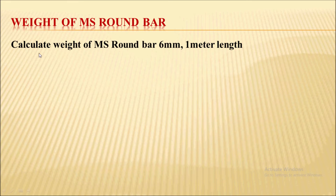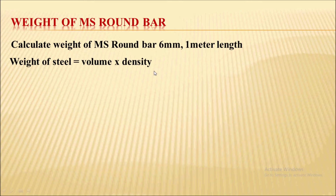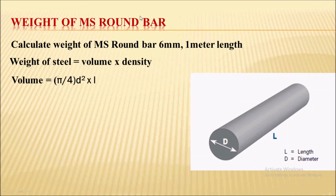Next we will see how to calculate the weight of mild steel round bar. Example: calculate the weight of mild steel round bar, 6 mm diameter and 1 meter length. Again, the weight of steel is volume into density. The volume for the MS round bar will be pi by 4 into d-squared into L.